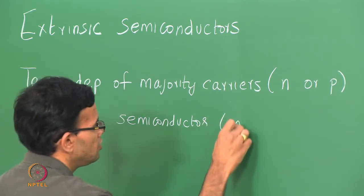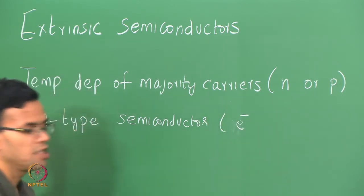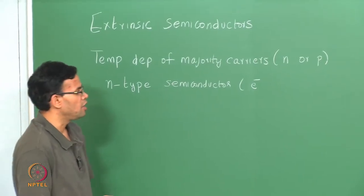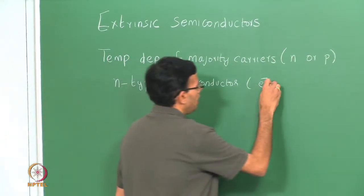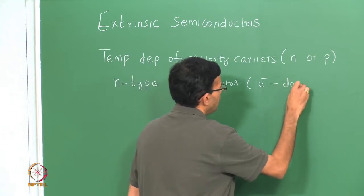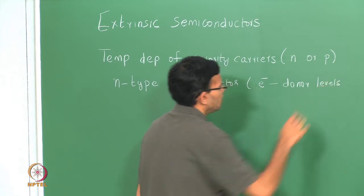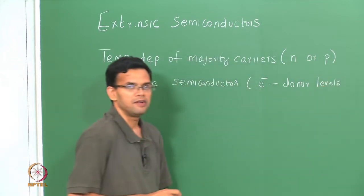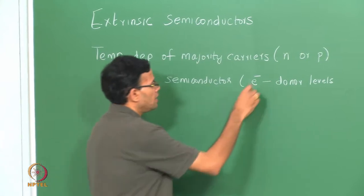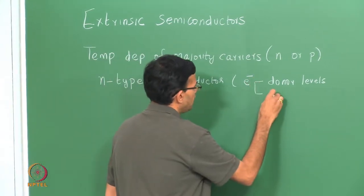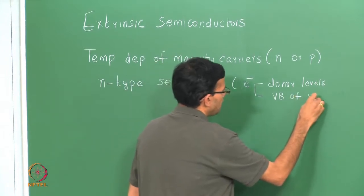In this case, electrons are the majority charge carriers and there are essentially two sources of electrons. One, electrons can come from the donor levels. These levels are close to the edge of the conduction band. At high temperatures, the electrons can also come from the valence band of the semiconductor.